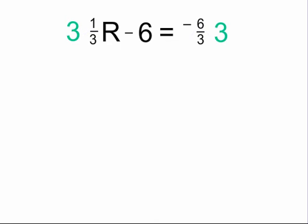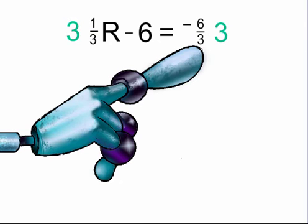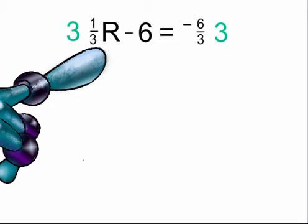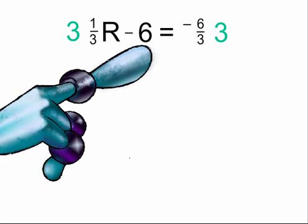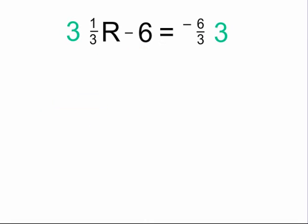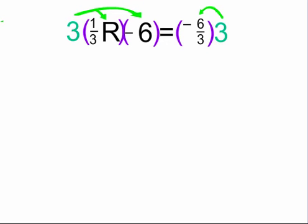We want to be careful when working on this equation. Notice that we have one term on one side of the equal sign — negative 6 over 3 — but on the other side we actually have two terms: 1/3r and negative 6. Let's put parentheses around all of our terms so we don't get confused. All of the terms will need to be multiplied by 3.